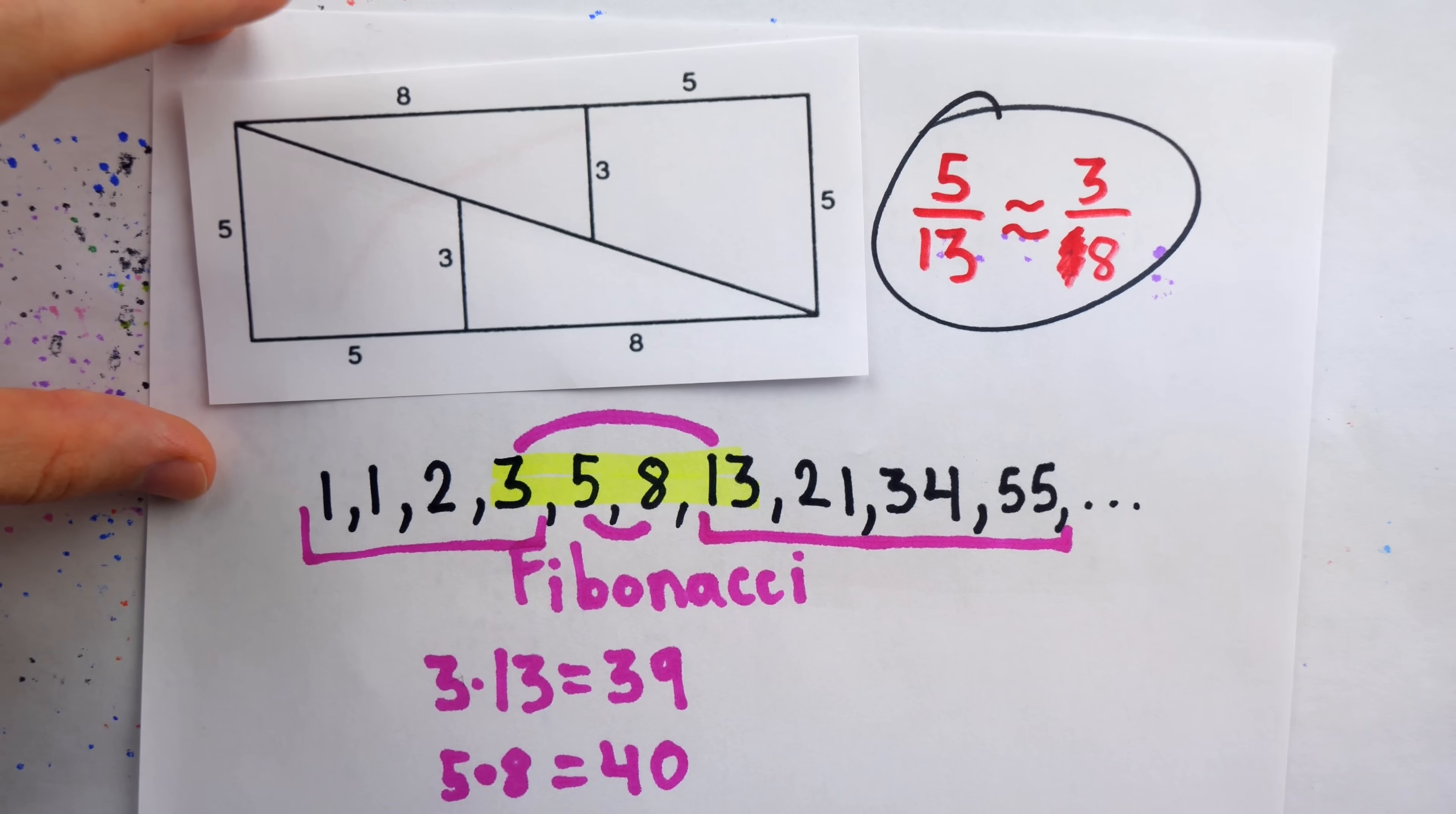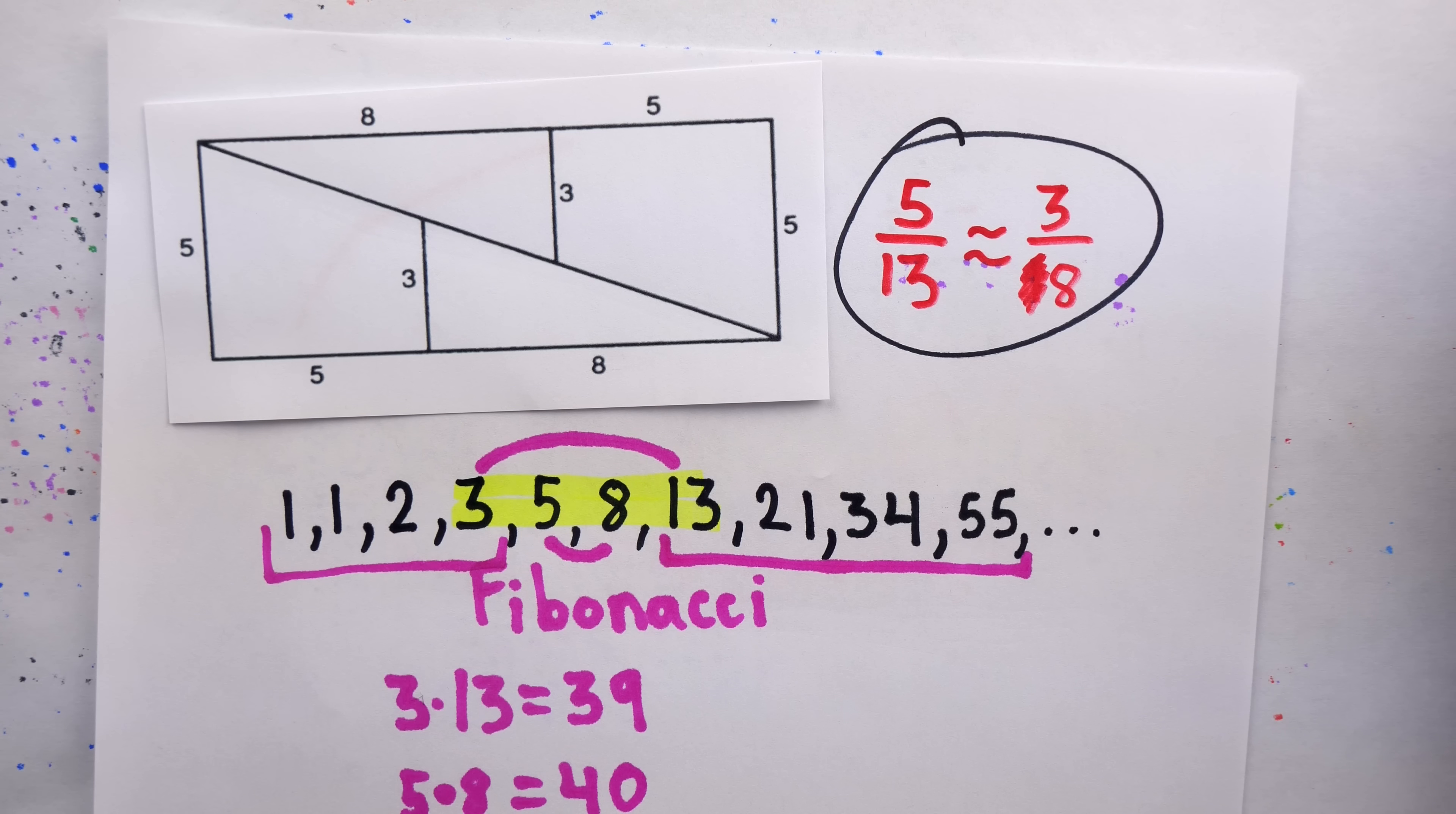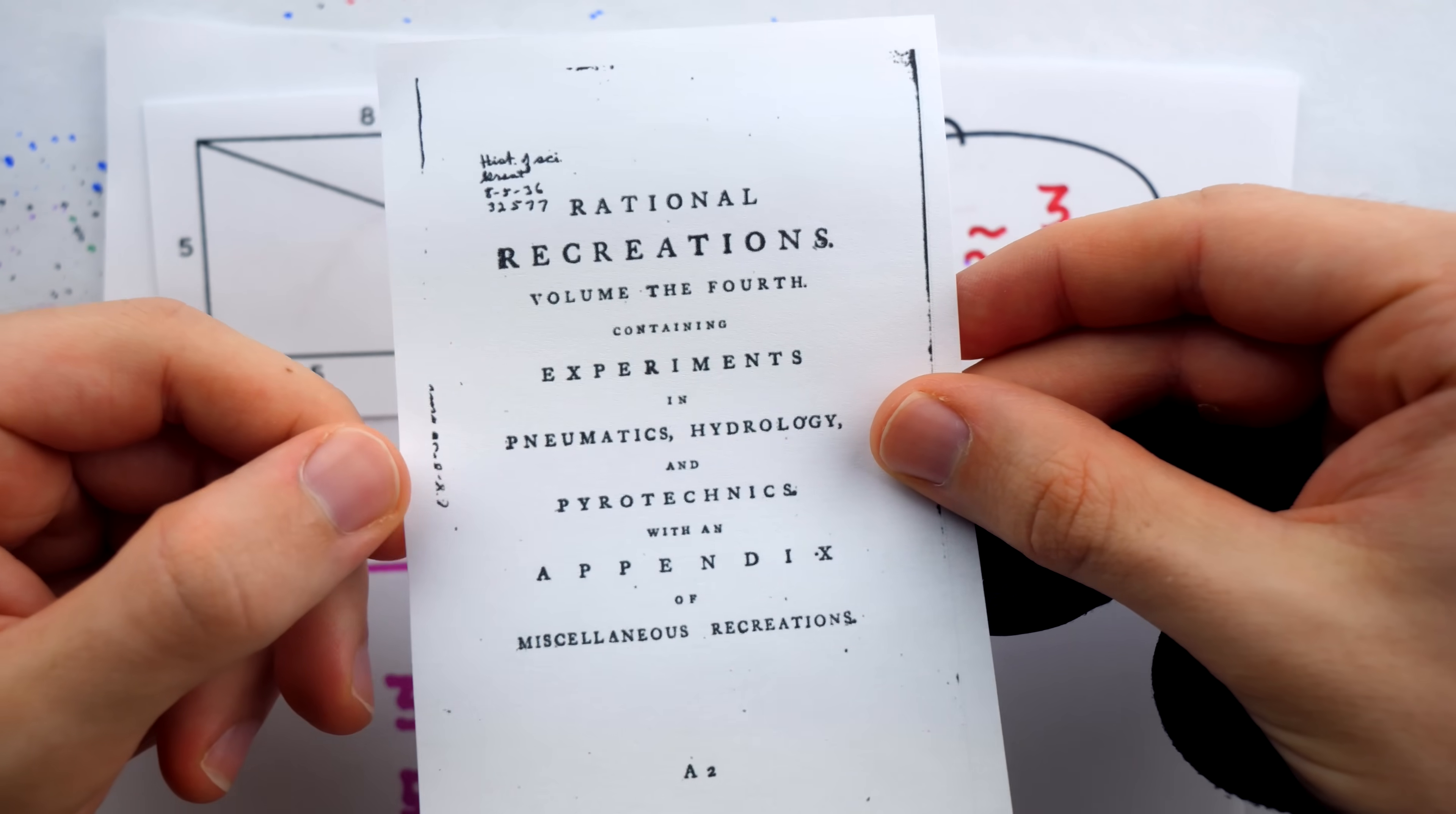So that's the origin of the vanishing square paradox, where really it was more of a materializing square paradox, introduced by William Hooper in 1774, somewhere in the appendix of his recreational pyrotechnics book.